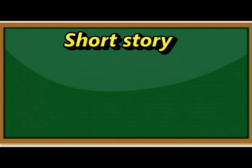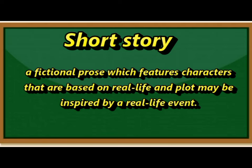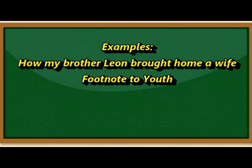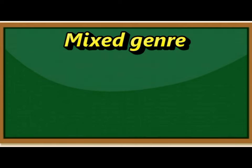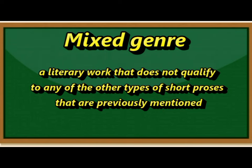Number four, short story. It is a fictional prose which features characters that are based on real life, and the plot may be inspired by a real-life event. Examples: How My Brother Leon Brought Home a Wife by Manuel Arguilla, and Footnote to Youth by Jose Garcia Villa. Number five, mixed genre. It is a literary work that does not qualify under any of the other types of short prose previously mentioned.